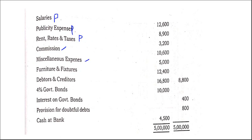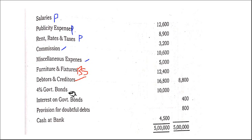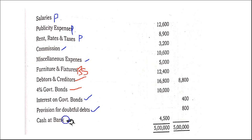Furniture and fixtures is an asset, so it goes in the balance sheet. Debtors and creditors also go in the balance sheet. Four percent government bonds is an investment asset — balance sheet. Interest on government bonds is revenue, so it goes in the profit and loss account. Provision for doubtful debts goes in the profit and loss account. Cash at bank is written in the balance sheet.